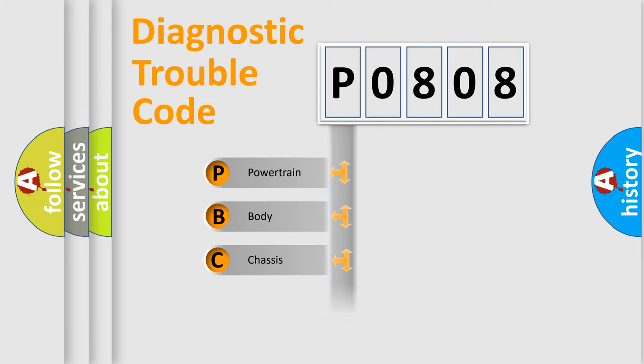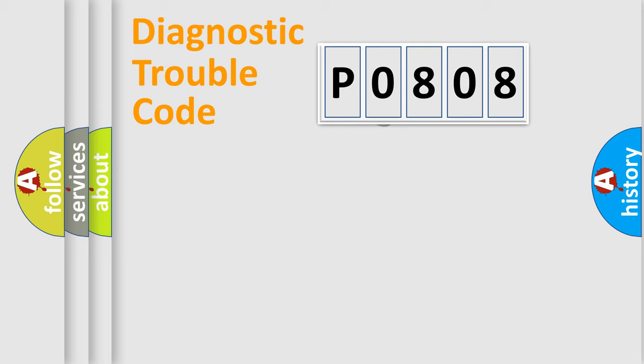Powertrain, Body, Chassis, Network. This distribution is defined in the first character code.